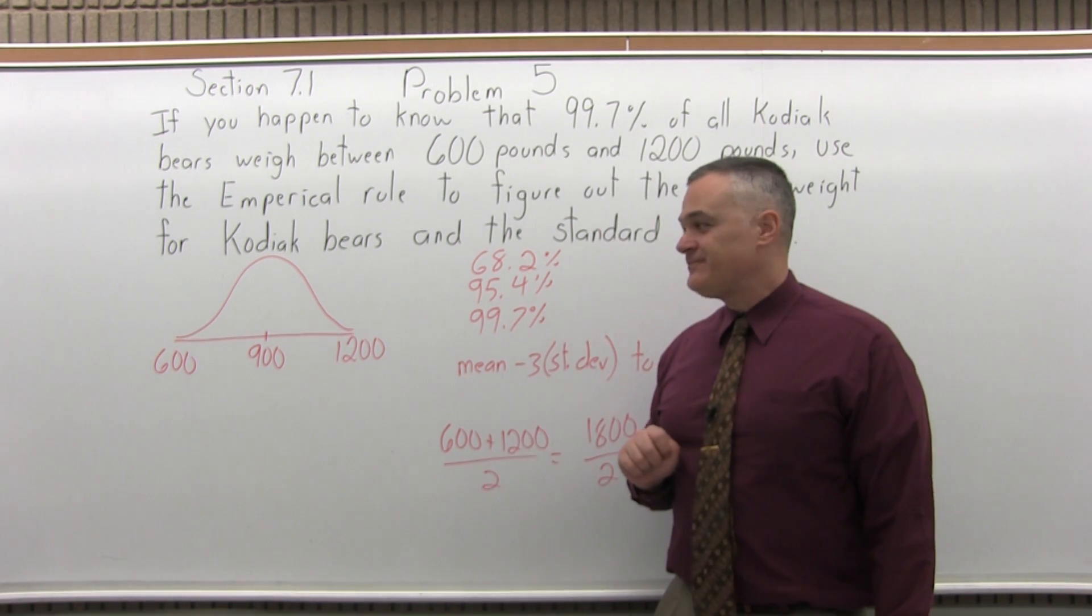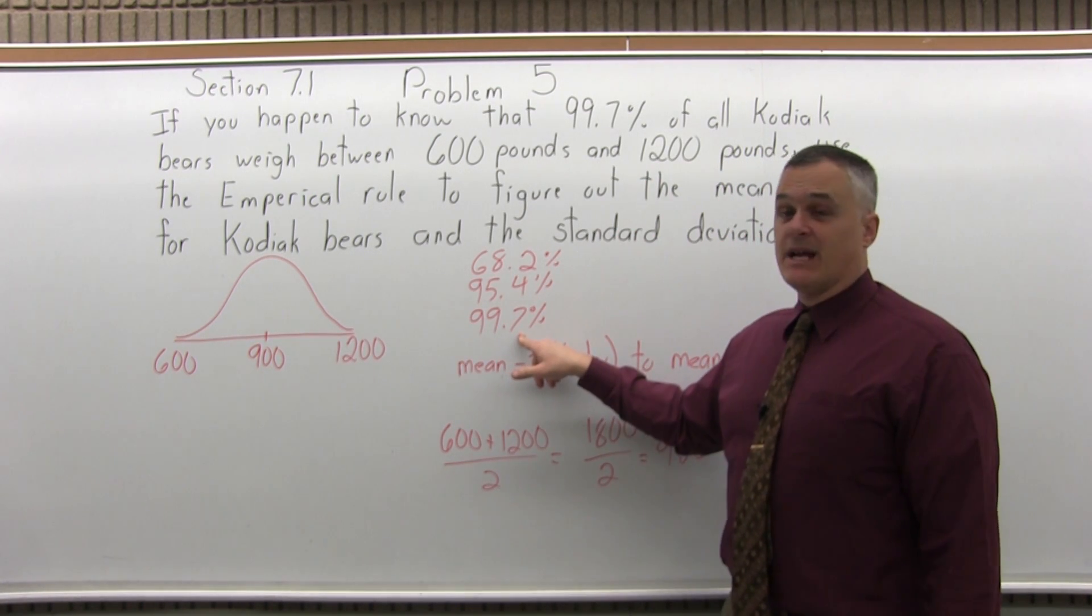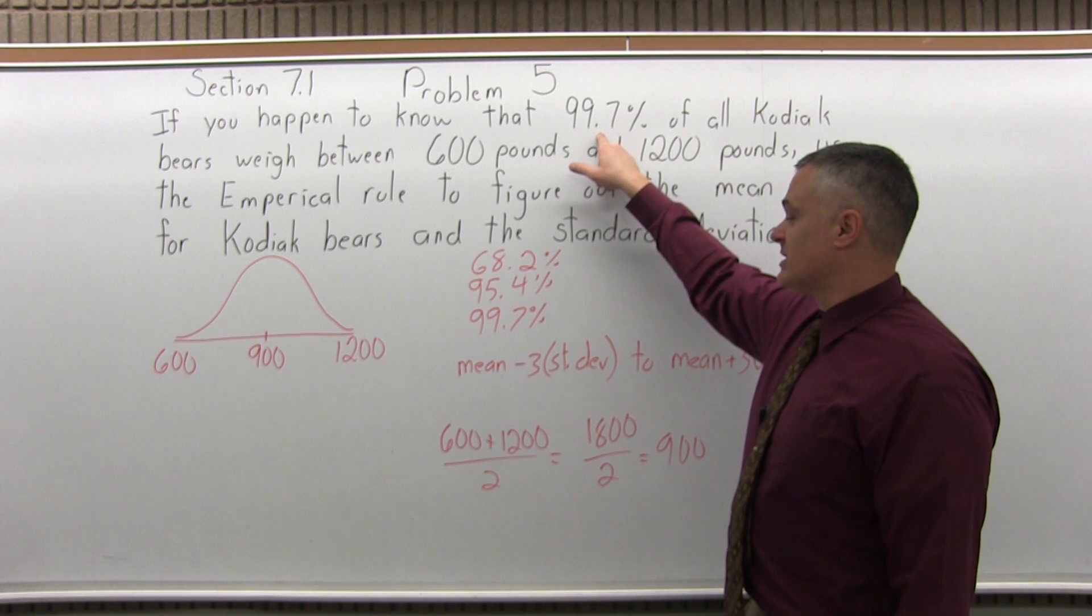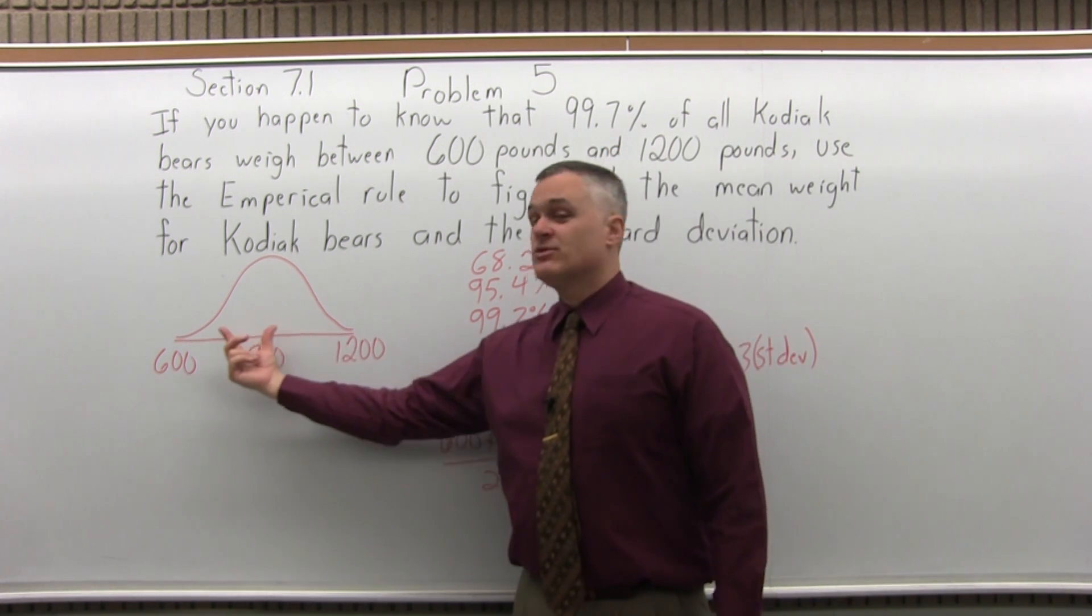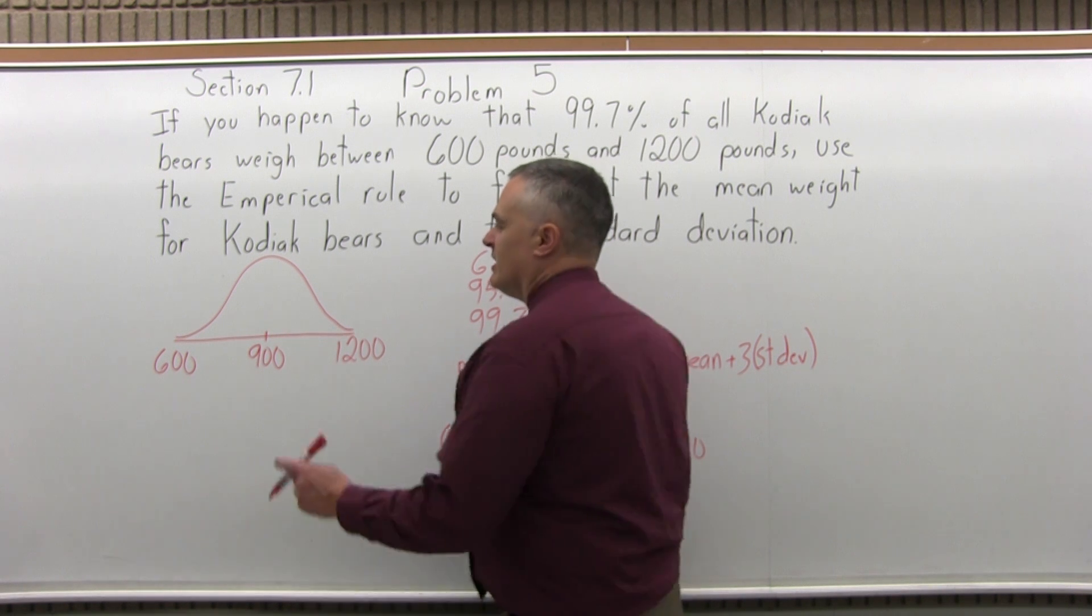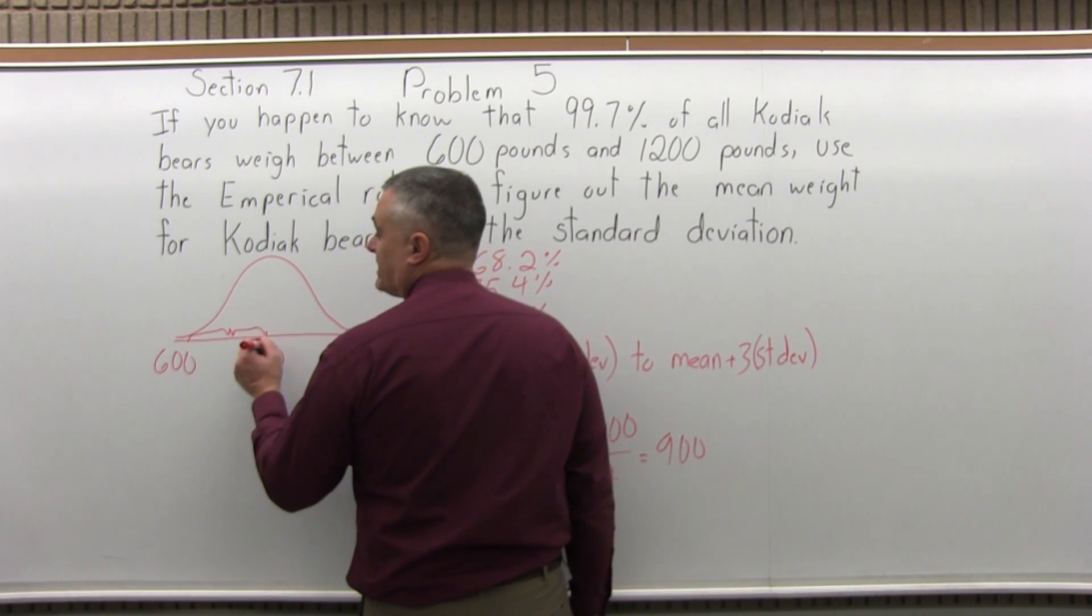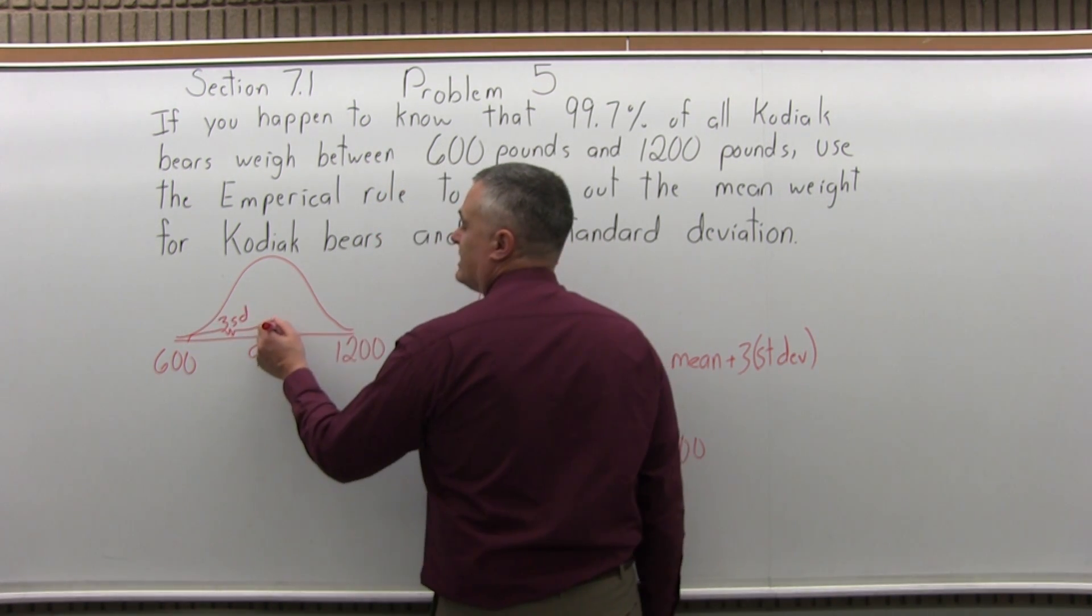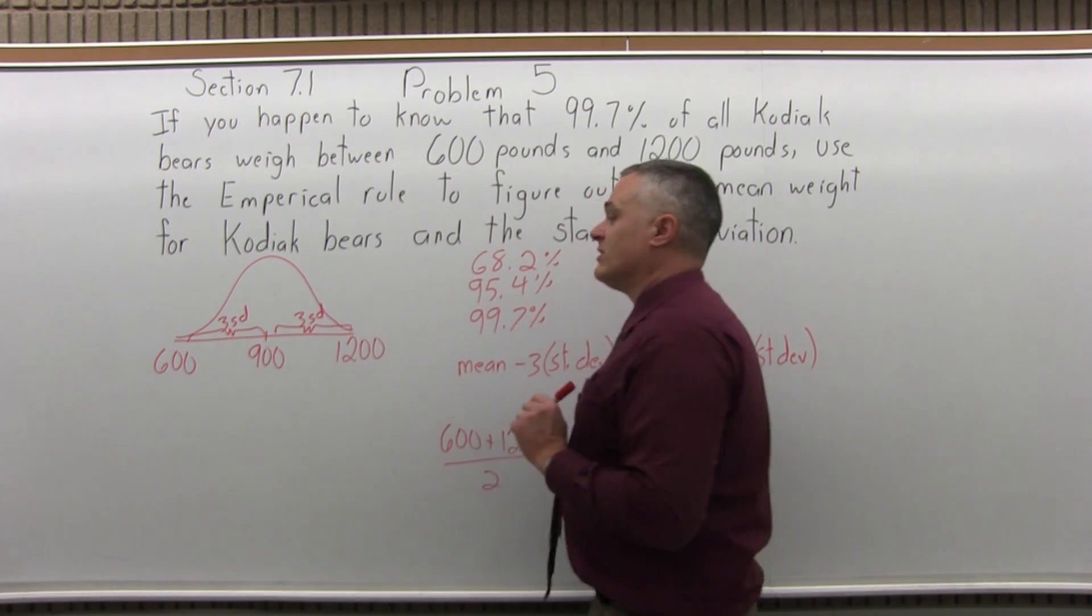Now, the standard deviation. We're using the bigger interval because it's 99.7%, that's what the question says. Either endpoint is three standard deviations from the mean. So it takes three standard deviations to get from 900 down to 600 and three standard deviations to get from the middle value of 900 up to the bigger end of the interval, 1200.